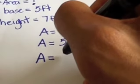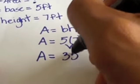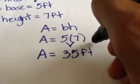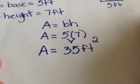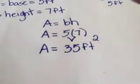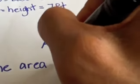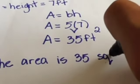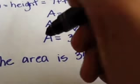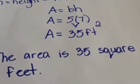So we're going to rewrite A. 5 times 7 equals 35 feet squared. And that is how we find the area of a parallelogram. We're going to end it off with a sentence: the area is 35 square feet. Thank you.